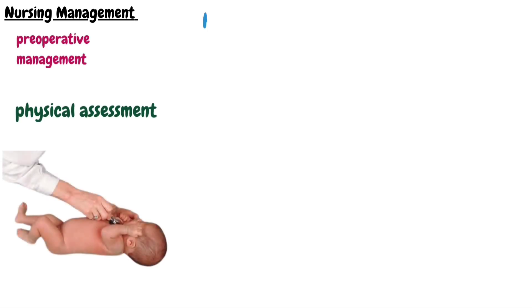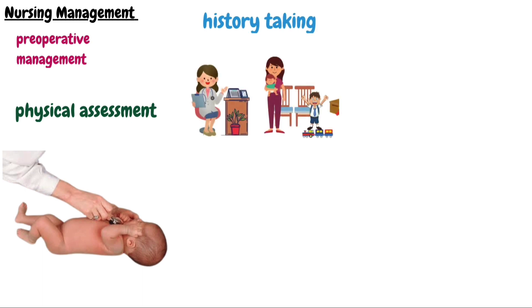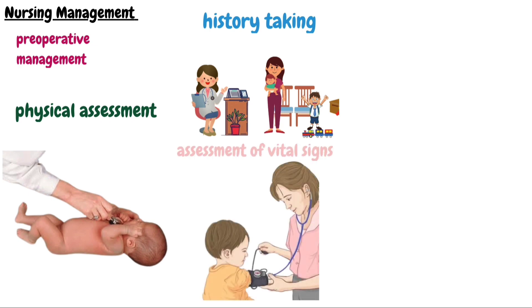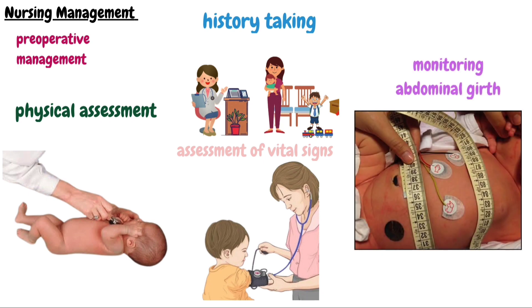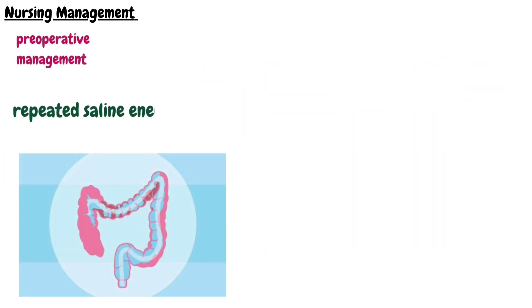Nursing interventions for imbalanced nutrition include providing high-calorie and high-protein diet. In severe cases, total parenteral nutrition can be given. In case of surgery, pre- and post-operative management is provided. Pre-operative management involves physical assessment and history taking, explaining to parents about the disease process, its causes, and the need for surgery, assessing vital signs to establish baseline data, and monitoring abdominal girth to detect abdominal distension.